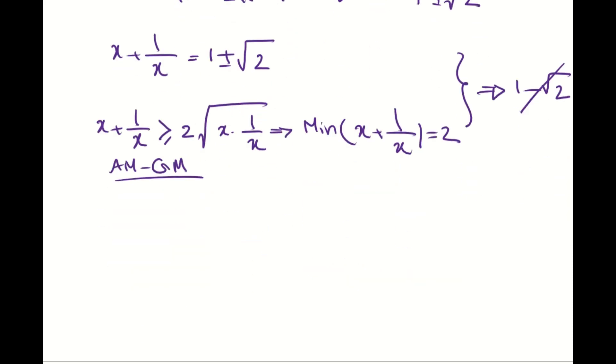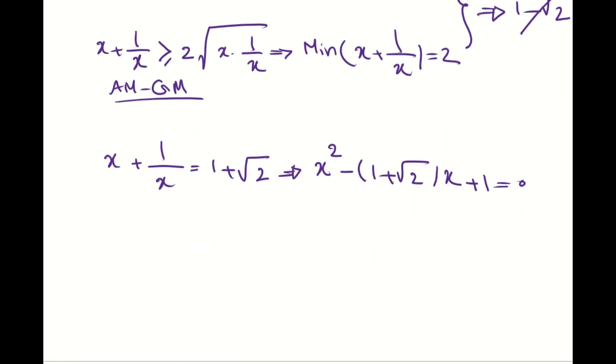It means that we only need to solve one of them. And then, this is a new quadratic equation and can be written as x squared minus 1 plus radical 2 times x plus 1 is 0. So, if you simplify this, you are going to end up with x is 1 plus radical 2 plus minus radical 3 plus 2 times radical 2 minus 4 over 2.